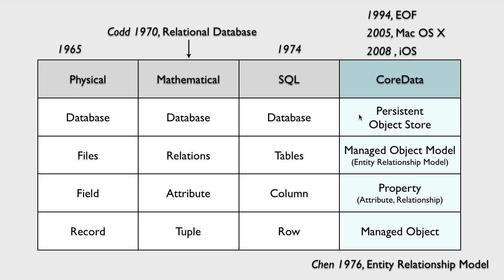Core Data was released in 2005 for Mac OS X and in iOS in 2008. Here are similar concepts used with Core Data: a persistent object store corresponds to a database; a managed object model corresponds to the tables inside the database. There are two types of properties — attributes and relations. A property corresponds to a column; a managed object corresponds to a row.